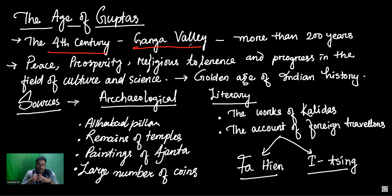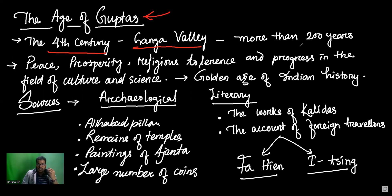In the Ganga Valley region, in the 4th century, there was a new dynasty called the Gupta Empire. This is the Gupta Empire, which was going to rise here in North India.